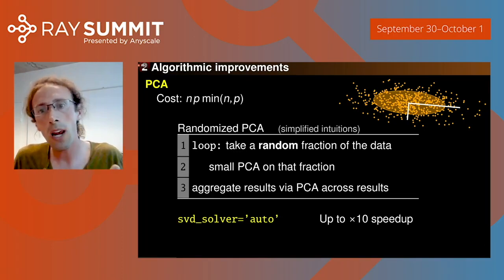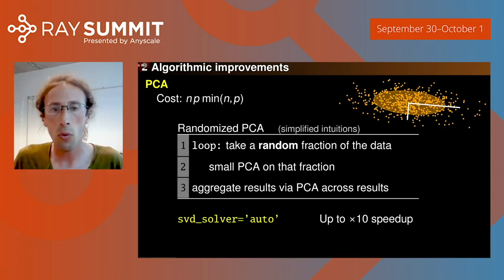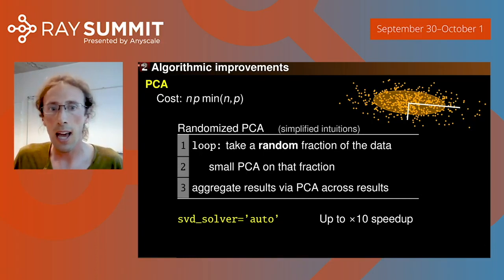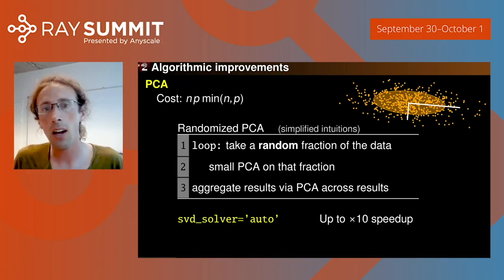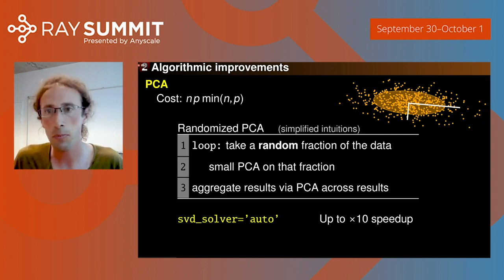There is one way of decreasing this cost, which is to use randomized algorithms. The idea is that a randomized algorithm benefits from the redundancy of the data to take shortcuts. Randomized PCA takes a random fraction of the data, does a small PCA on that fraction — which is much less costly due to the quadratic cost — and repeats this maybe a dozen times, then aggregates the results. This is now the default in scikit-learn PCA, controlled by heuristics via the 'auto' solver, and typically gives up to 10x speedup on the same hardware.